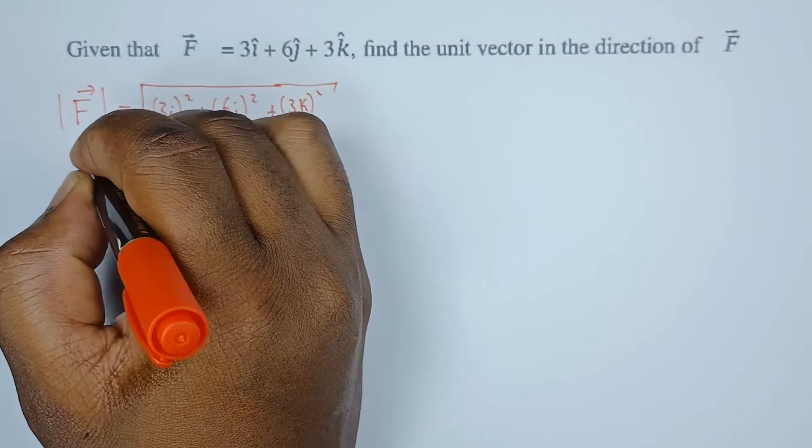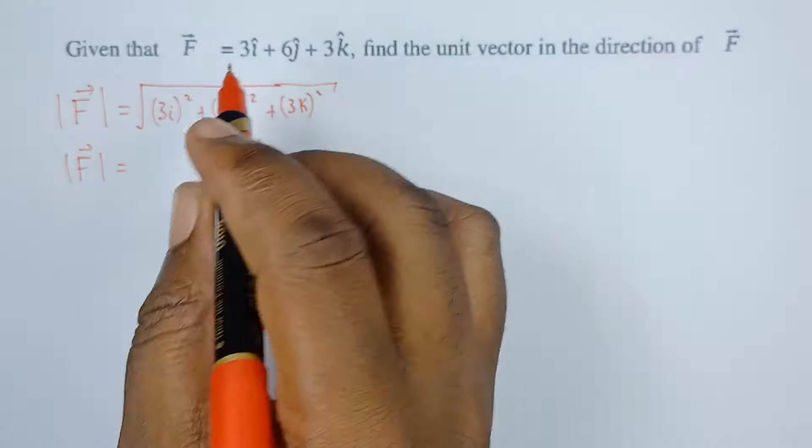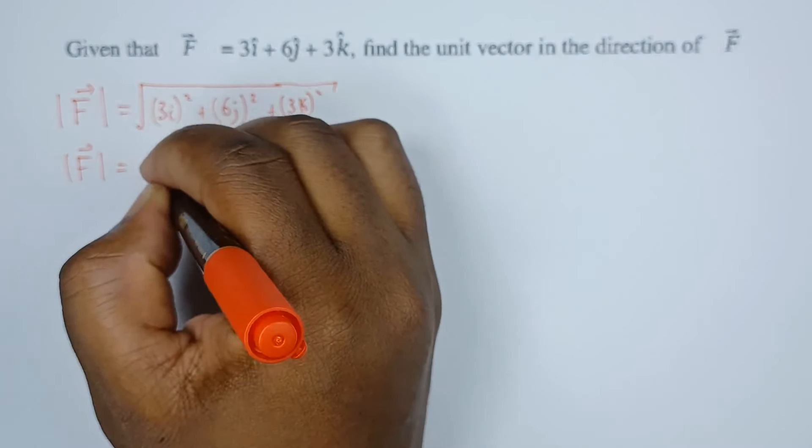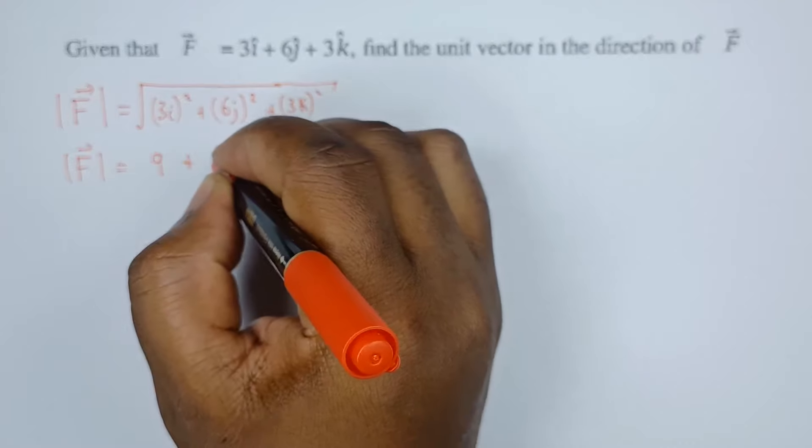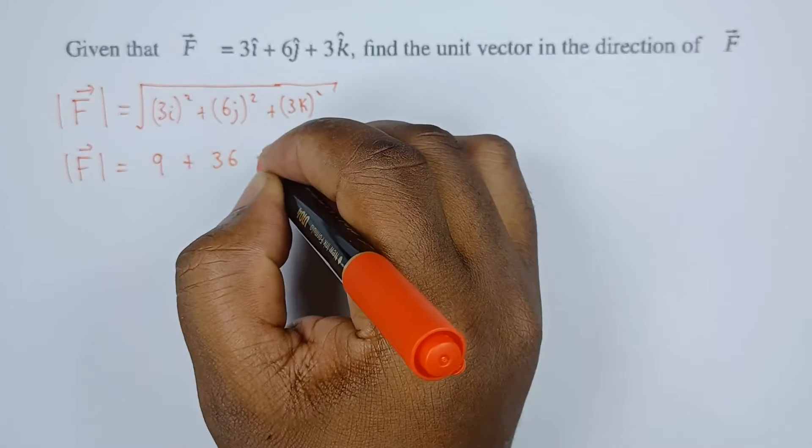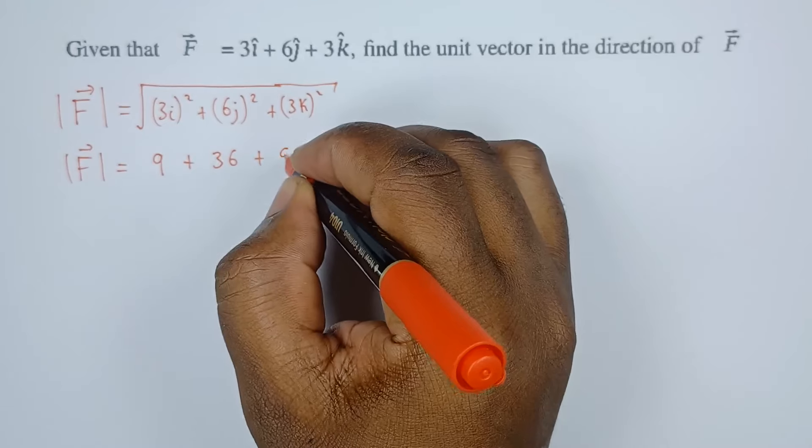So what do we get? This gives us 9 plus 36 plus another 9.